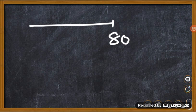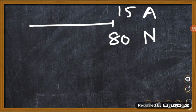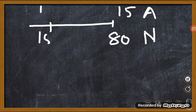The average age of 80 boys in a class is 15 years. The average age of a group of 15 boys in the class is 16 years.